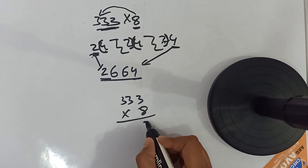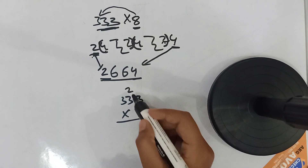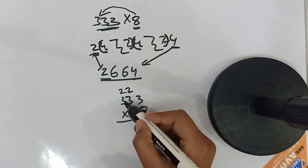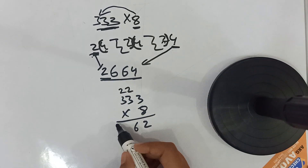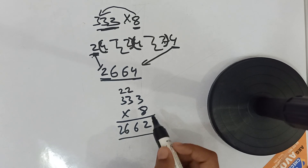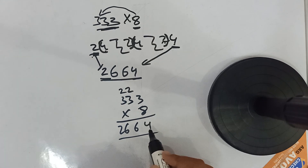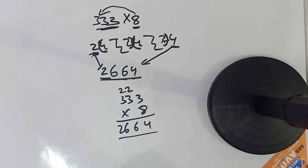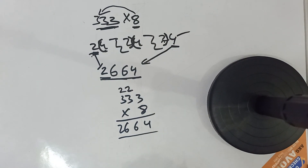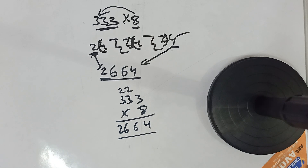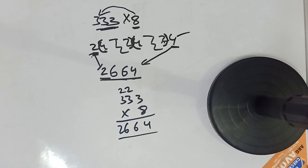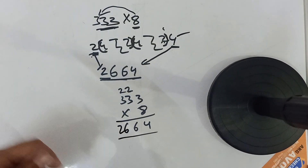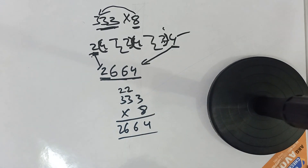Let's verify: 8 threes are 24, then 8 threes are 24 plus 2 carry is 26, carry 2, then 8 threes are 24 plus 2 carry is 26. So the answer is 2664. Our answer is absolutely correct! And as I said, you can do this method mentally — it is designed for mental calculation.